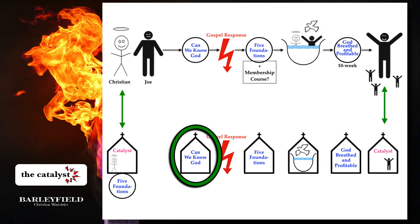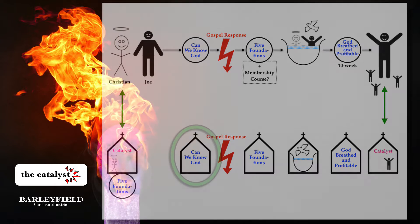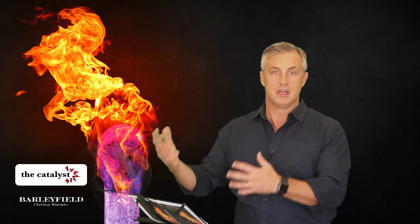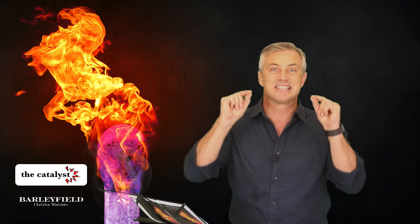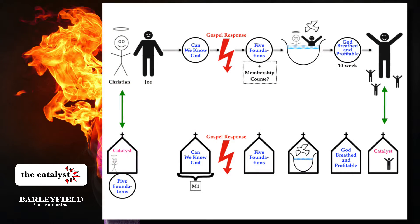Number two, someone — or perhaps a group of people if multiple events are running — is regularly running the Can We Know God course in the life of the church, or whatever evangelistic course you prefer to use. So when a church member has attended the Catalyst Course and is ready to invite someone to an evangelistic Bible study, they know there is a Can We Know God course starting soon because someone in the church has taken responsibility to make sure it's happening regularly. That's M1 — ministry position number one.